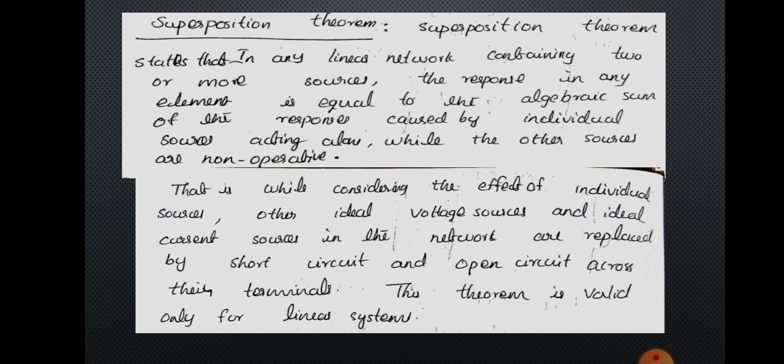While considering the effect of individual sources, other ideal voltage sources and ideal current sources in the network are replaced by short circuit and open circuit across their terminals. This theorem is valid only for linear systems.